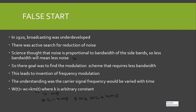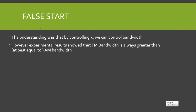They thought that by controlling the variable k they could control the bandwidth of the signal. However, experimental results showed that FM bandwidth is always greater than or at best equal to the AM bandwidth. So then why do we study frequency modulation? We will discuss in the coming lecture that FM has one advantage: it is immune to noise.